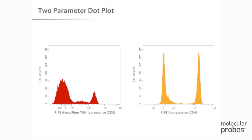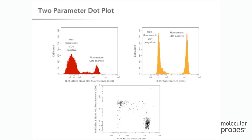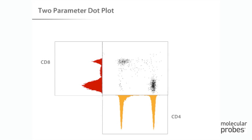Histograms display simple information. However, biological samples usually contain multiple cell populations, each with different characteristics. These populations can be better distinguished by looking at two parameters at once. If a blood cell sample is probed with two fluorescently labeled antibodies reacting to CD4 and CD8 cell surface antigens, the resulting histograms show two populations for each antigen — fluorescent or non-fluorescent. The correlation between the CD4 and CD8 populations can only be seen using a dot plot. Some cells have neither antigen, some have one antigen or the other, and very few have both.